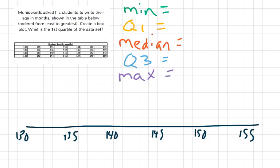So I'll show you how to find those. The minimum is just going to be the smallest number in our data set, and conveniently, this data set is in order. So our minimum, the smallest value there, is 130.